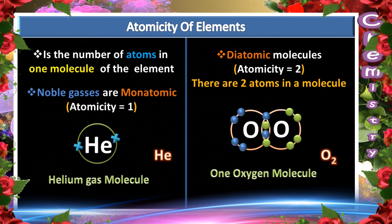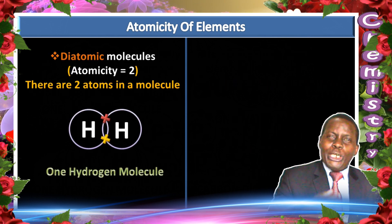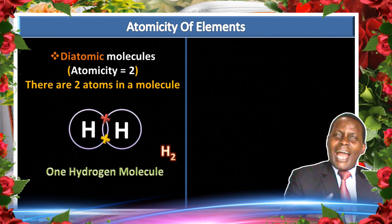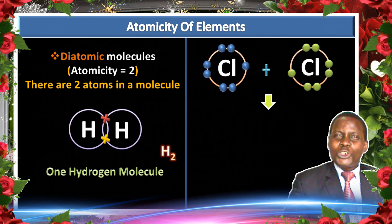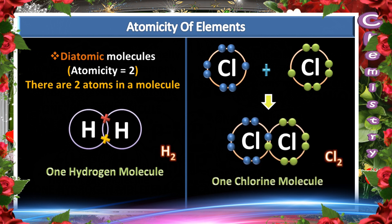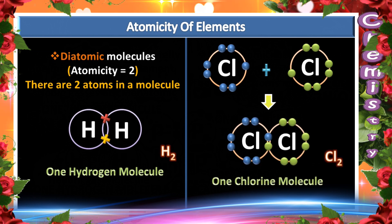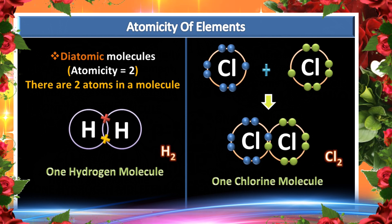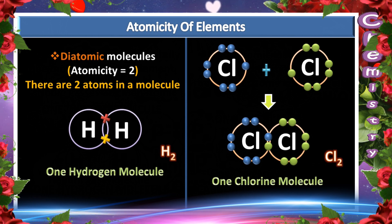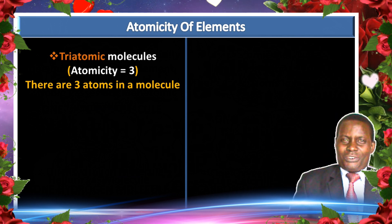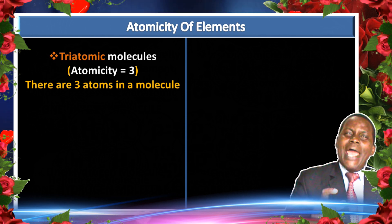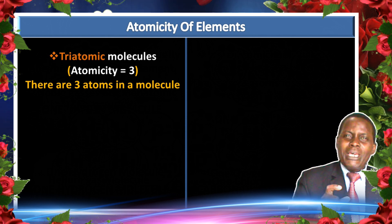Hydrogen is also diatomic — one molecule of hydrogen has two hydrogen atoms. Chlorine is another example: one molecule of chlorine has two chlorine atoms. Therefore that type of molecule is referred to as diatomic because it has two atoms in one molecule.